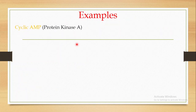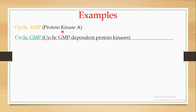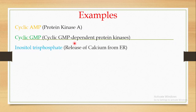When talking about examples of secondary messengers, the important examples include cyclic AMP, which is responsible for the activation of a protein kinase known as Protein Kinase A. Cyclic GMP is another example from the secondary messengers, and cyclic GMP is responsible for the activation of cyclic GMP-dependent protein kinases. Another important example is inositol triphosphate (IP3), which is responsible for the release of calcium from the endoplasmic reticulum.